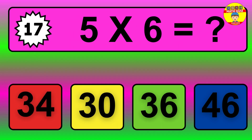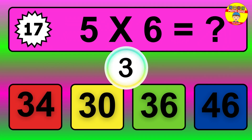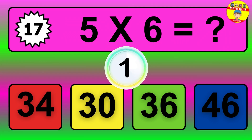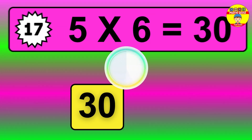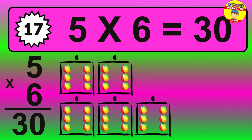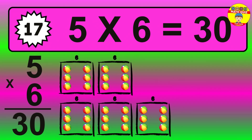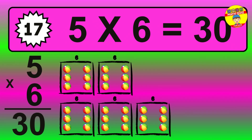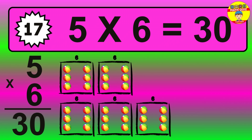Question 17. 5 times 6 equals what? The answer is 5 times 6 is 30. To calculate, we have 5 groups with 6 balls each one. So, how many balls do we have? 30 balls.